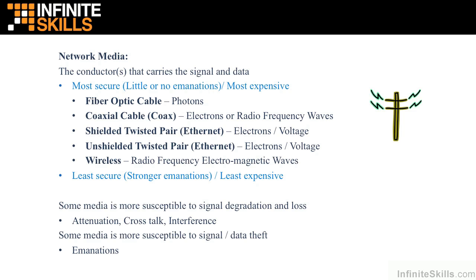With wireless, there is essentially no media cost since we're using the air. Wireless networks are easy to assemble, tear down, and relocate. However, these emanations allow for theft of data signal and also allow for inbound propagation of unwanted signals that degrade the signal due to cross-talk and interference. The term attenuation deals with signal degradation over distance, which we're going to look at in just a few minutes.